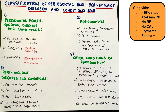In the biofilm-induced category, plaque is the primary cause. In the non-biofilm-induced category, plaque is not the primary cause. Under periodontitis, we have necrotizing periodontal diseases, periodontitis itself, and periodontitis as a manifestation of systemic diseases — meaning a systemic disease that causes periodontitis as its own complication, for example, diabetes.